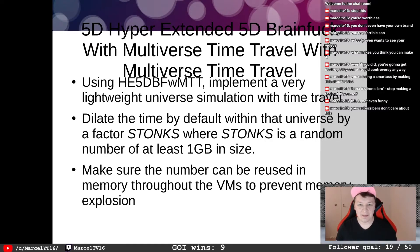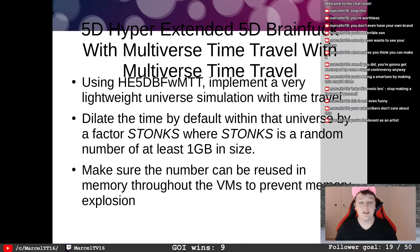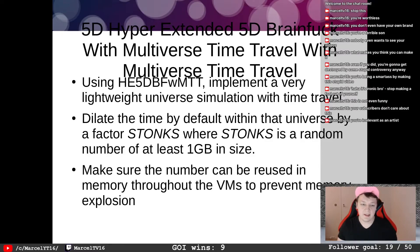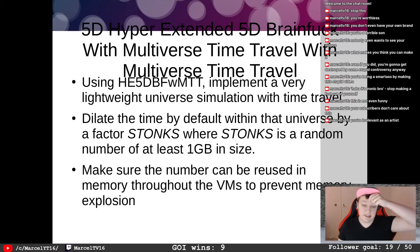Next up is 5D Hyper-Extended 5D Brain Fuck with Multiverse Time Travel with Multiverse Time Travel. Using he5D BFWMTT, implement a very light universe simulation with time travel, then dilate time as far as you can. We use a number called 'stonks' — a random number of at least one gigabyte in size. If your PC can handle more, go ahead. The idea is to have a huge, huge, huge number.